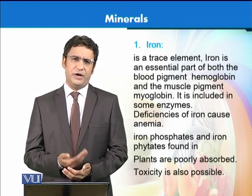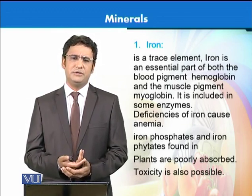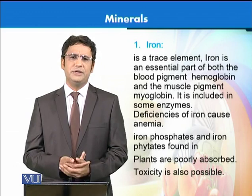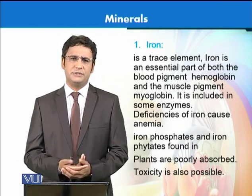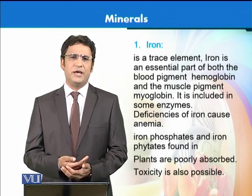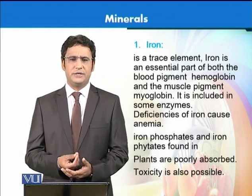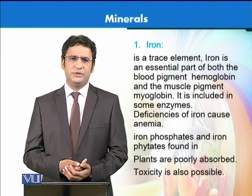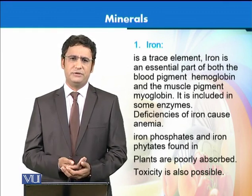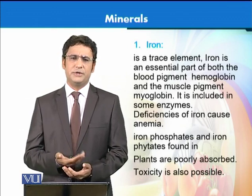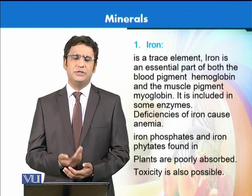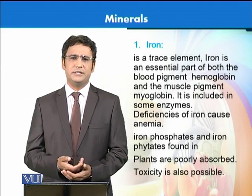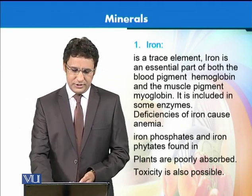Deficiency of iron can lead to serious problems such as anemia. Iron can be present in multiple foods, for example in meat and liver. It is also present in plant sources, but plant sources can have certain anti-nutritional factors like phytates that bind with iron, preventing it from being absorbed by the human body. Iron can also be provided through supplements, but a higher amount of iron can be toxic to the human body.